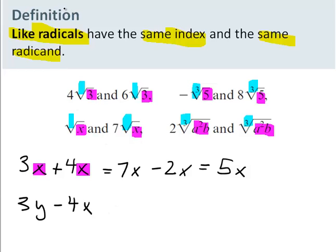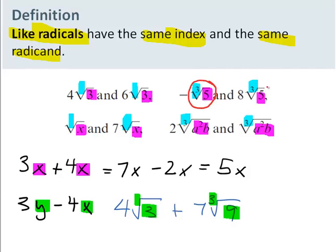And by the same idea, I can't do this. Because these variables are different, and this index is not the same as this, and this radicand is not the same as this. So what you're looking for with these, you can combine them if this particular little chunk is the same as this particular little chunk.